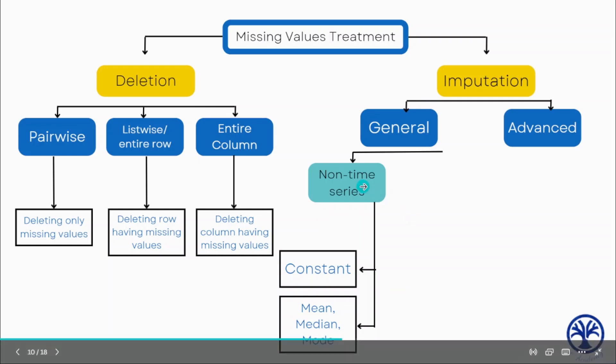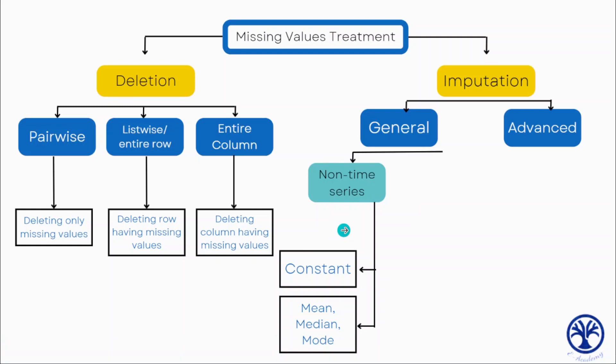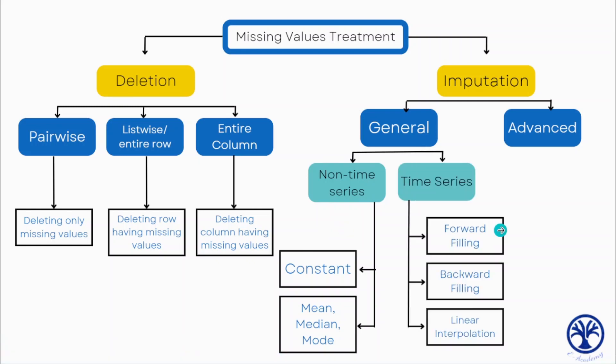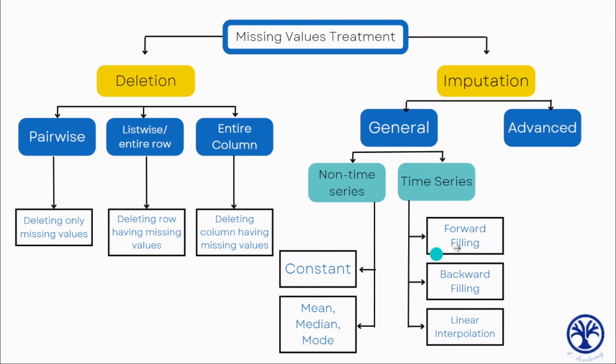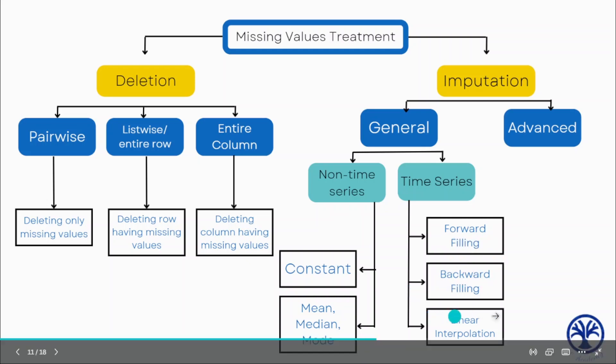When we are dealing with time series data, we can fill with forward and backward filling as well as regression or linear interpolation. Forward and backward filling means we fill a particular missing value either with the forward value or with the previous value. Linear interpolation uses regression analysis to fill up the particular value.